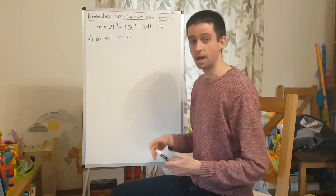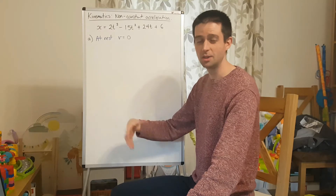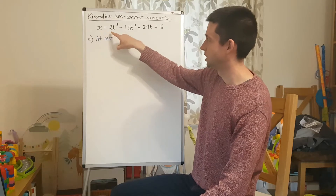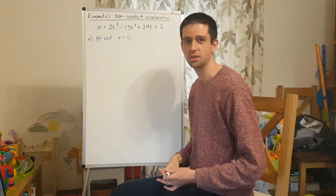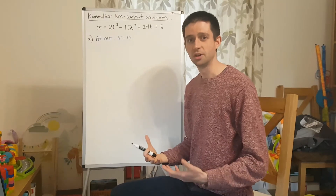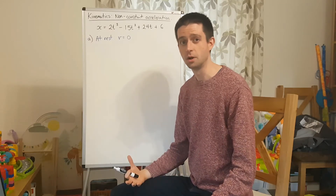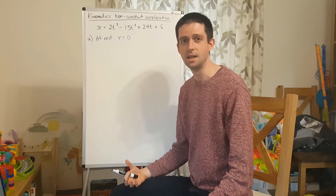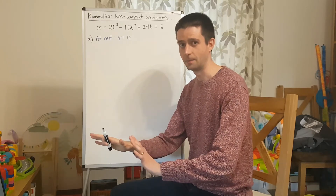We are given that a particle P is moving on the x-axis, and at time t seconds the displacement — its position relative to its starting point — is given by x equals 2t cubed minus 15t squared plus 24t plus 6. Straight away I can tell this is a non-constant acceleration question because I've been given an equation for the position. The Suvat equations are for constant acceleration only, so I can't use Suvat here — I have to use calculus.